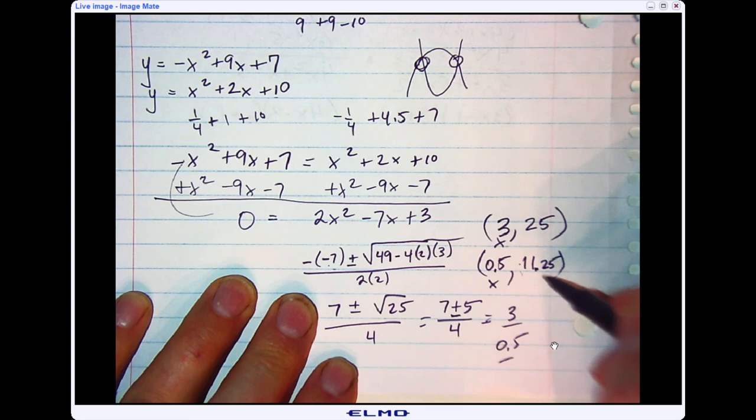So again, these would be my two points of intersection if I graph the parabolas and make my solution at points of intersection.